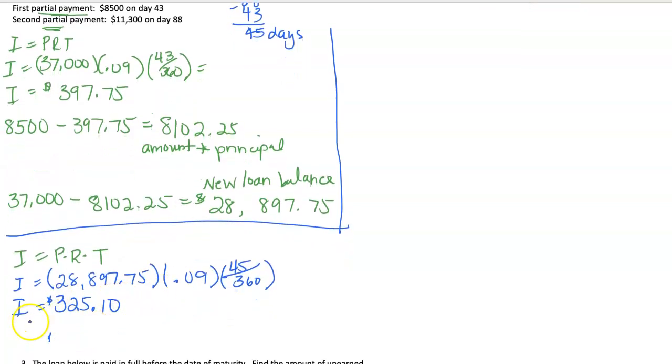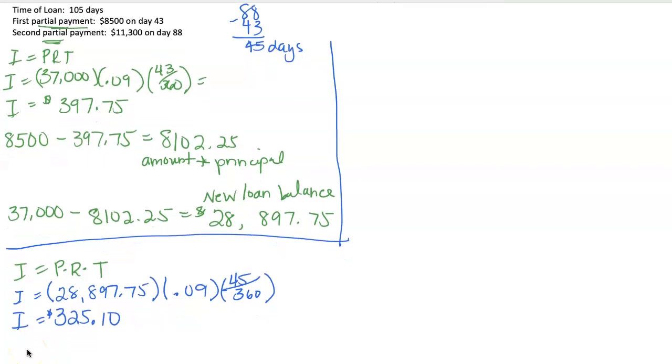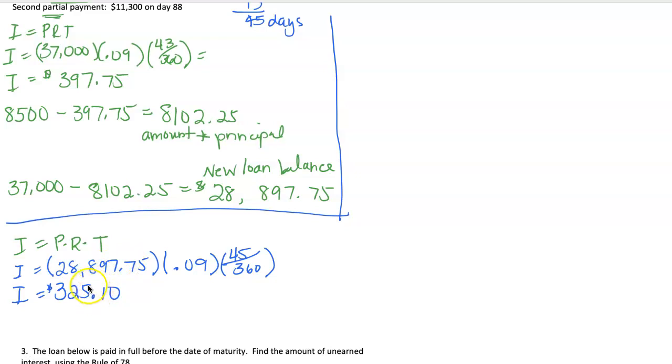And I'm going to find my new balance. So I'm going to take the old balance of $28,897.75 and subtract away. Now we need to find out how much is going to reduce our principal. So we have to pay that interest first. And our second partial payment was $11,300. So $11,300 is how much was paid. $325.10 has to be paid first. So that leaves $10,974.90 to go towards the principal.